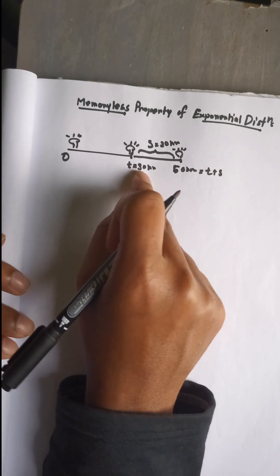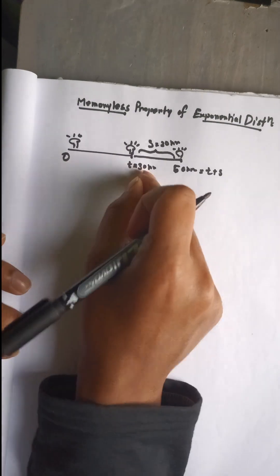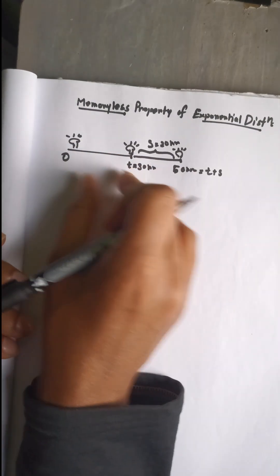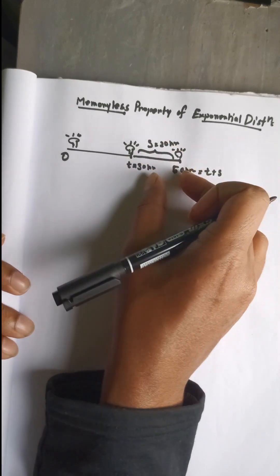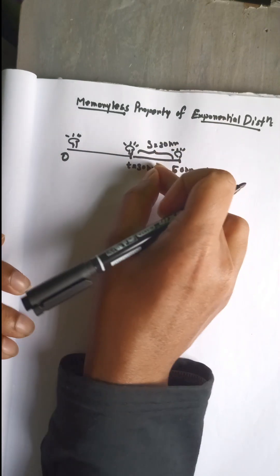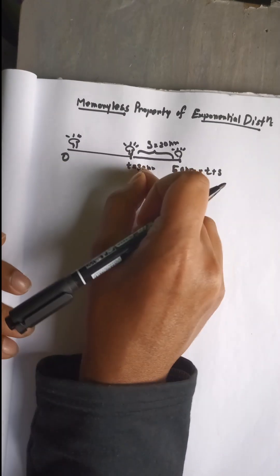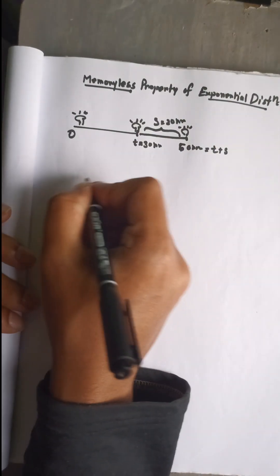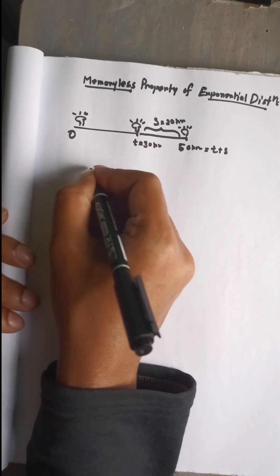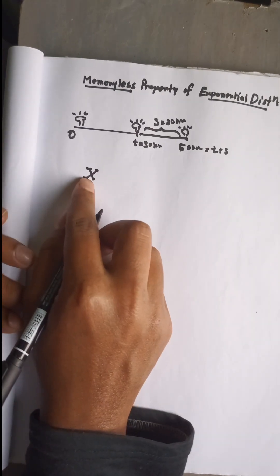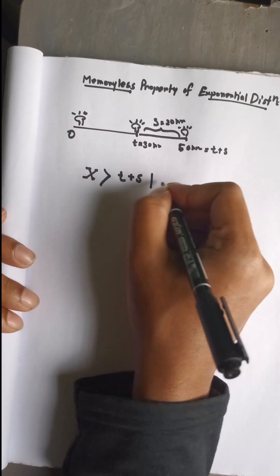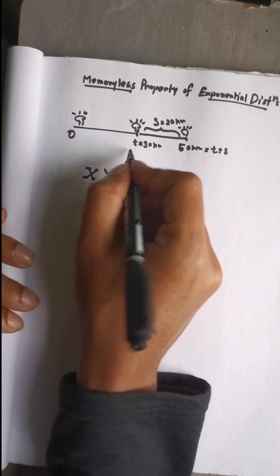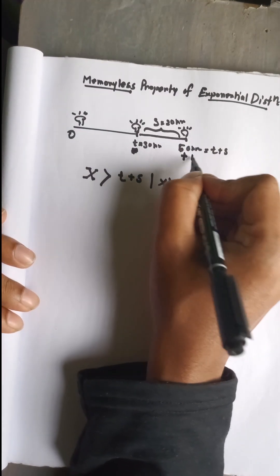If I model from 0 to time 30 hours using the exponential distribution, it counts 0 to 30 hours very well. But whenever I apply it to a light bulb which has survived up to 30 hours — asking what is the probability that it will survive an extra 20 hours — the model does not memorize that the bulb already survived 30 hours. The survival of the light bulb is denoted by X, and we ask: what is the probability that it will survive up to t plus s hours, given that it already survived up to time t?